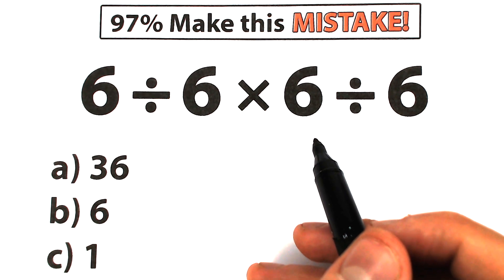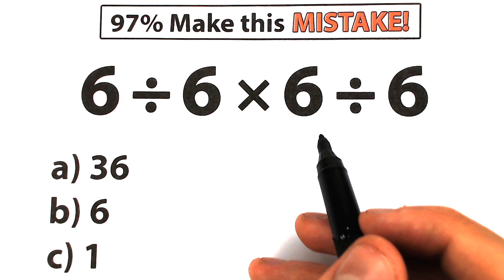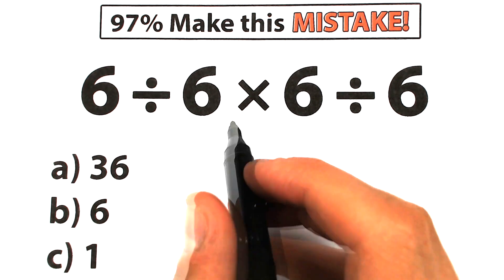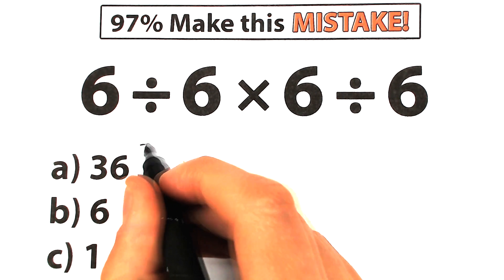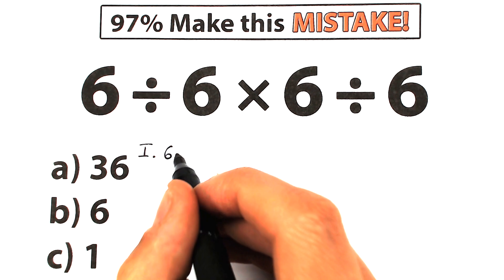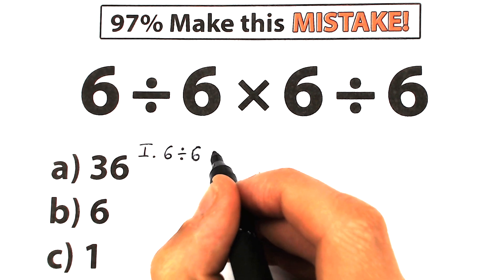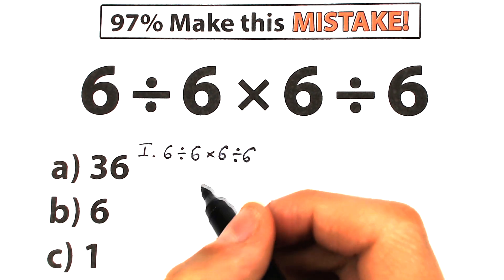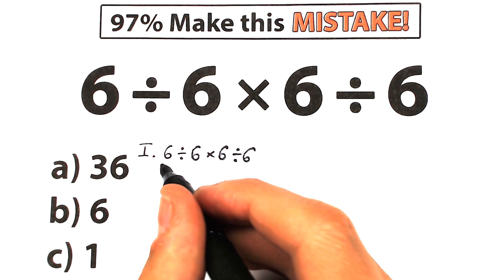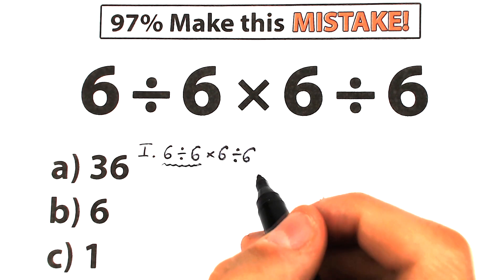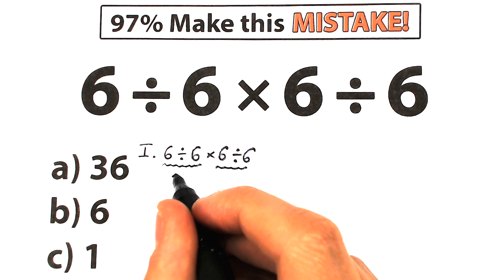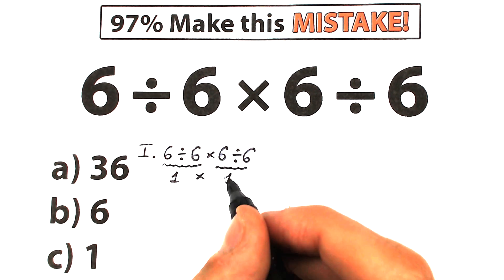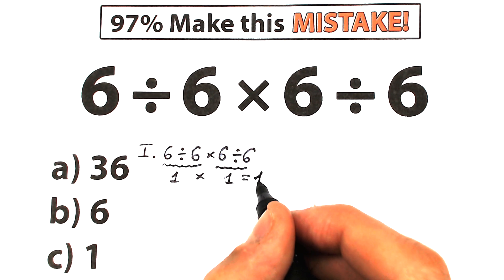Seems pretty basic, seems pretty easy, however many people are going to get this problem incorrect. But don't panic — I'm going to fully explain how to solve this correctly, step by step. First, let me show you this first interpretation: we have 6 divided by 6, times 6 divided by 6. A lot of students solve it like this — 6 divided by 6 is 1, and 6 divided by 6 is also 1, so with this multiplication in the middle, their answer is 1, option C.